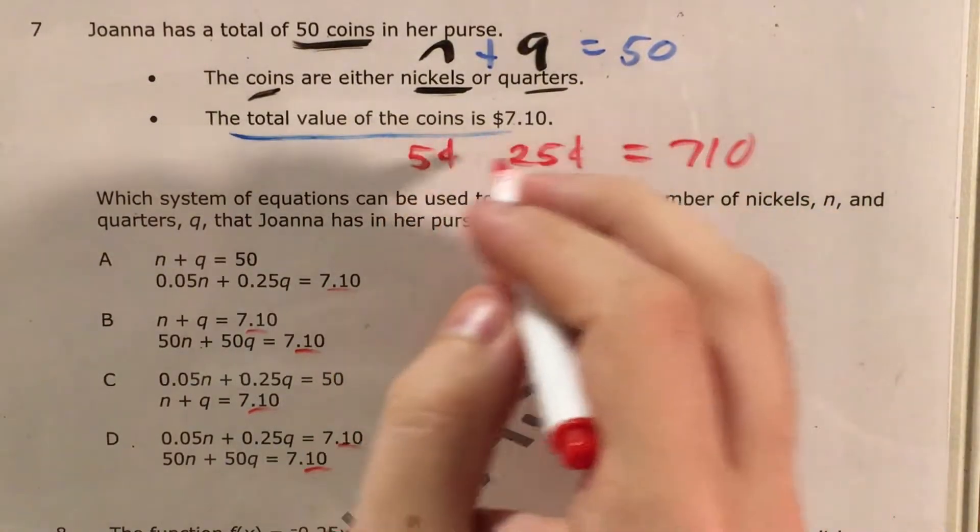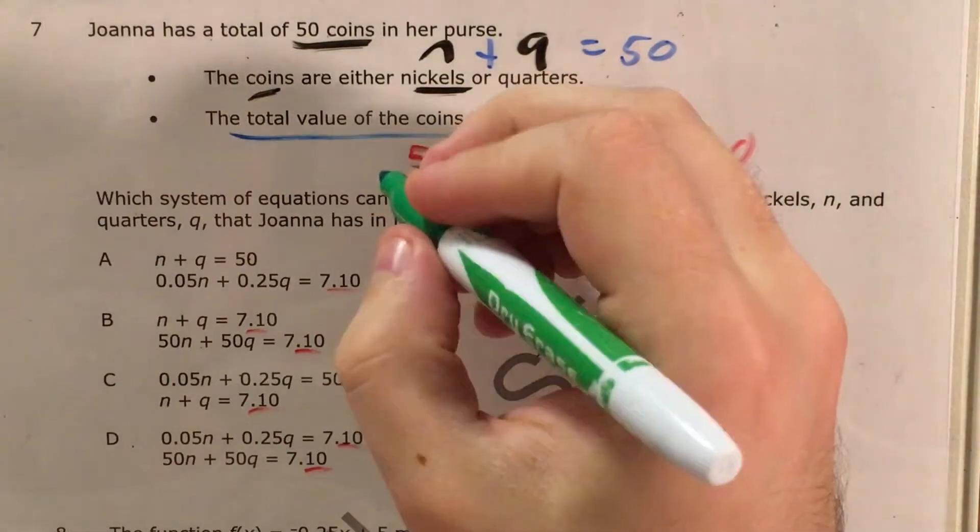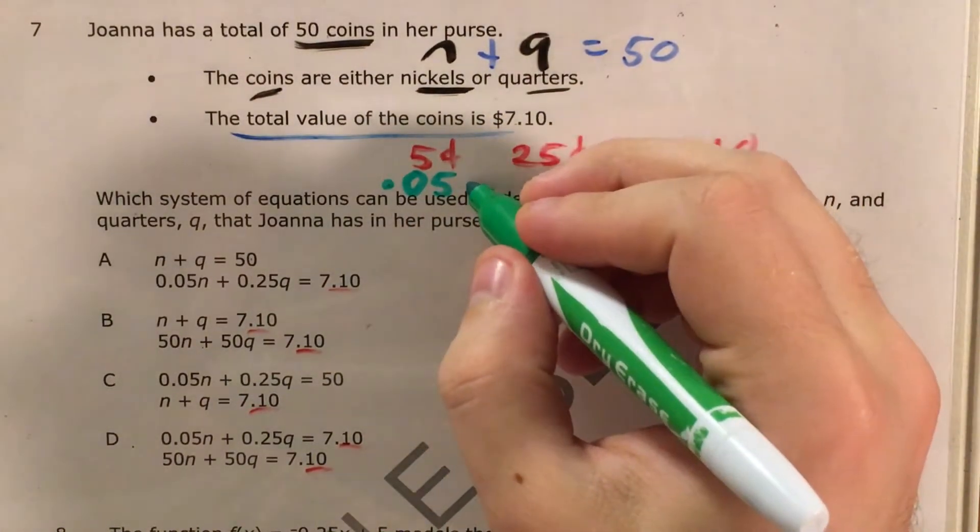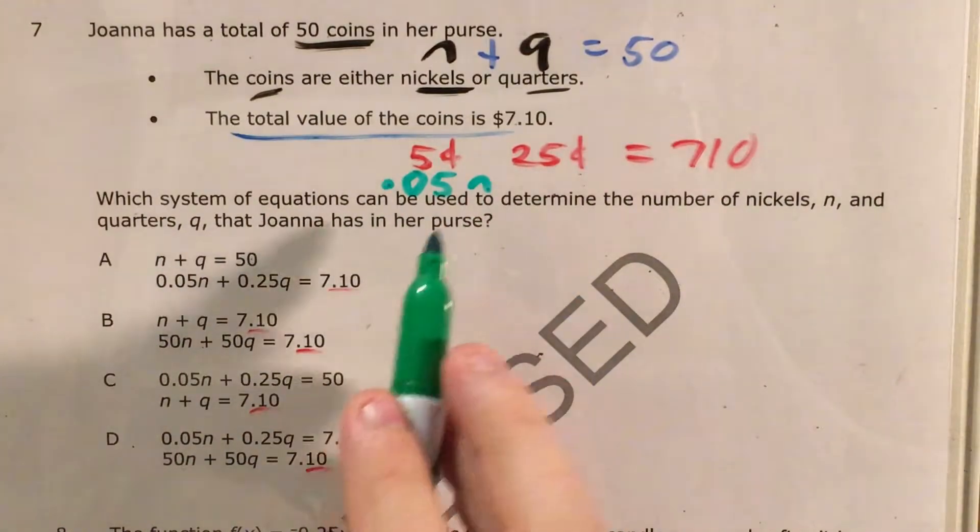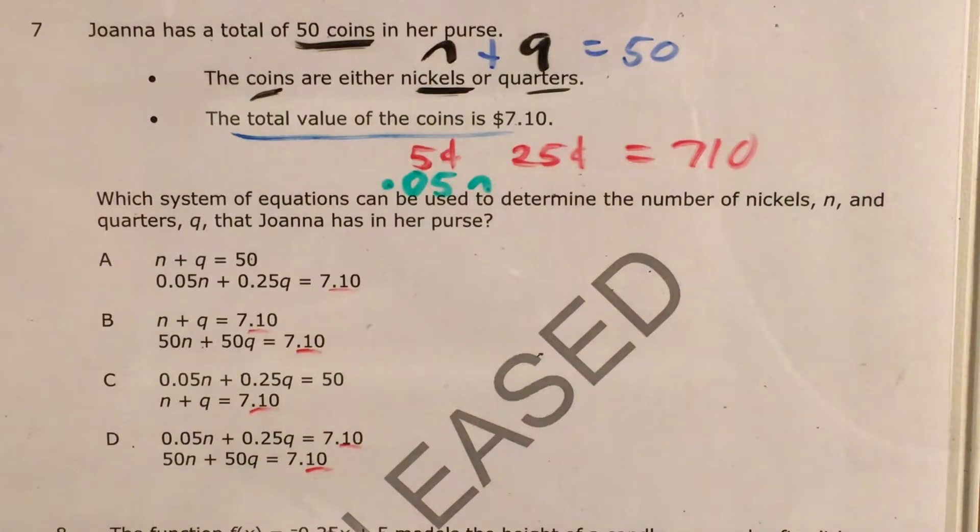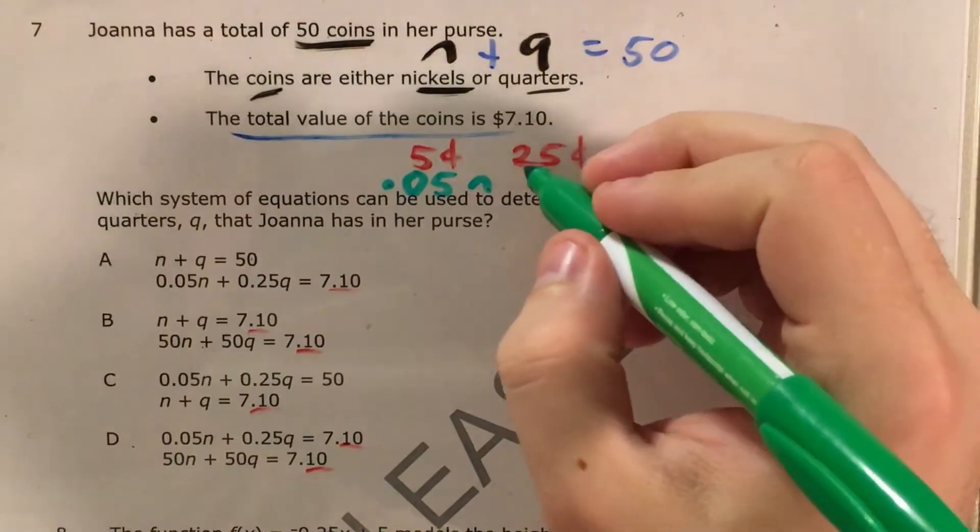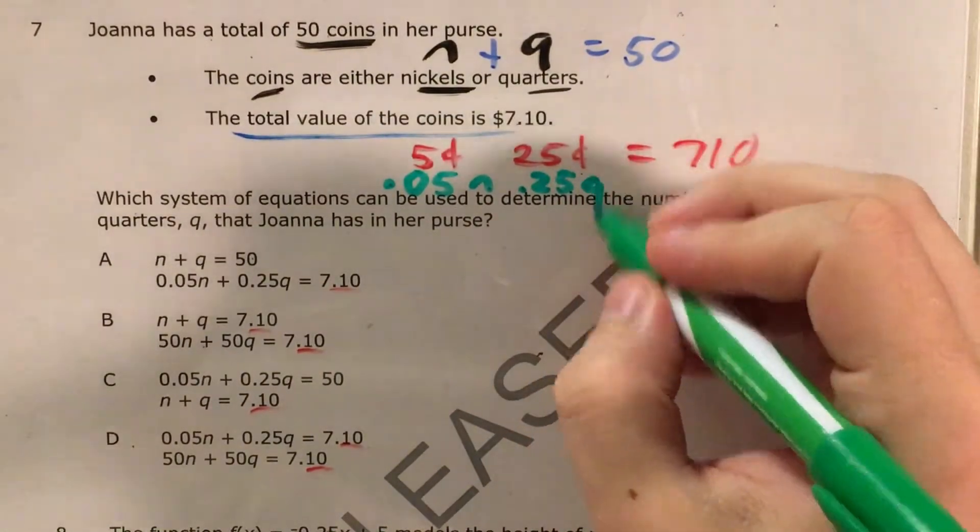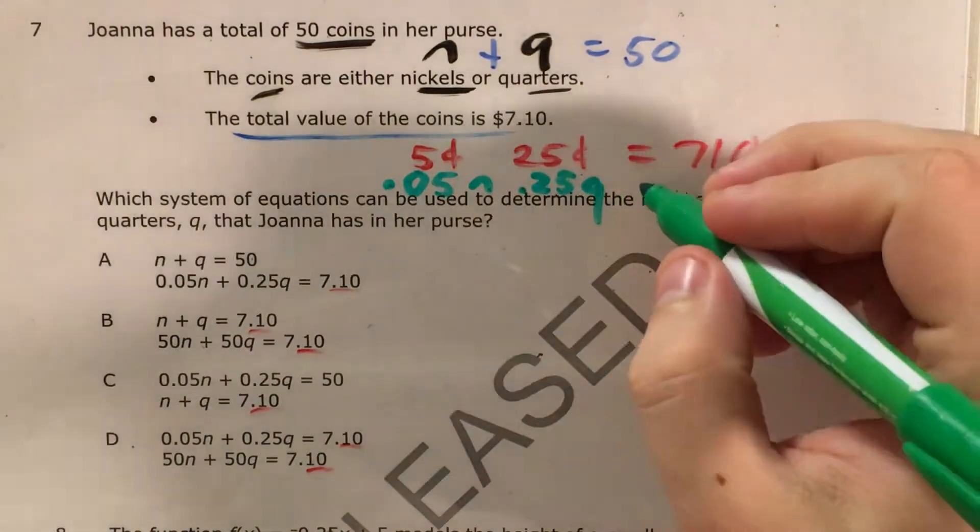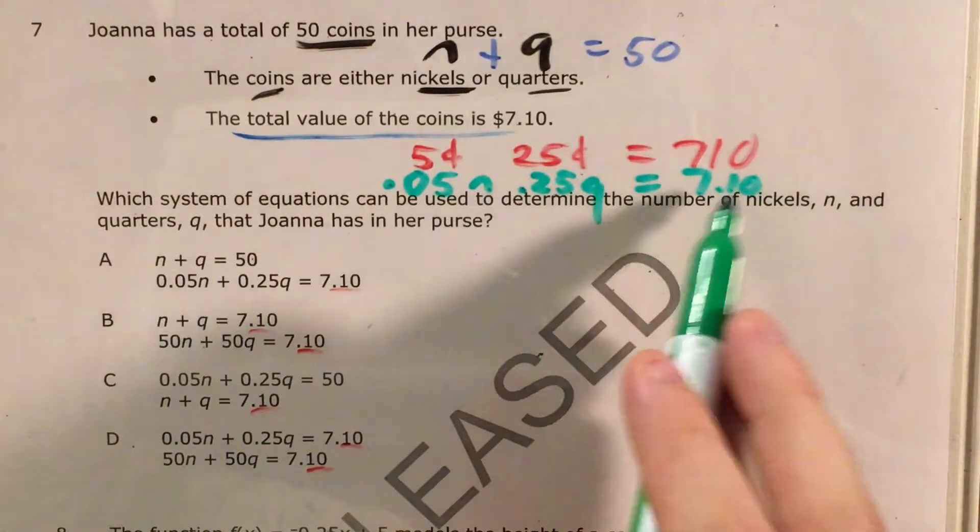5 cents we can rewrite not as .5 dollars but .05 dollars. So that's 5 cents per nickel. 5 cents is 5 hundredths of a dollar. And then per is one of the words that I can use to tell myself that I'm multiplying. So 5 hundredths times N. And then 25 cents per quarter, we can call 25 hundredths. 25 cents per quarter, 25 hundredths times Q equals, and now we can write this in just dollars and cents language, 7.10.